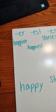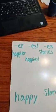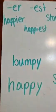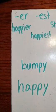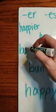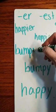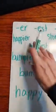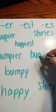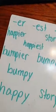I'm going to give you another. You see if you can change it for these two. Let's do this one — bumpy. What do we do? Change the Y to I, and add our ending. Very good. What if it's going to be bumpiest? Change the Y to I, add EST. Good job, guys.